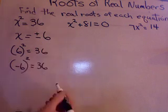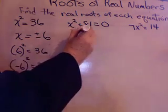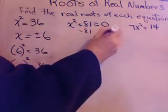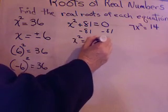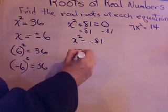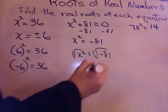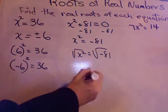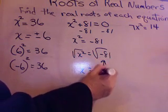This problem is a little bit different. I have a step first. I need to get the x squared part by itself. Let's subtract 81. Now I get x squared equals negative 81. When I try to do the square root of, this time, square root of x squared equals the square root of negative 81. This part is easy. What about here?